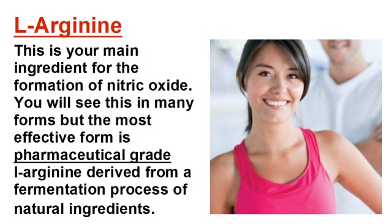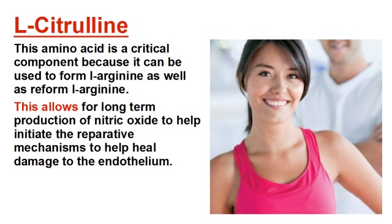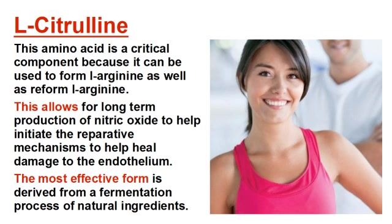The first ingredient is the amino acid L-arginine — your main ingredient for the formation of nitric oxide. The most effective form is pharmaceutical grade L-arginine derived from a fermentation process of natural ingredients. The second ingredient is the amino acid L-citrulline. This amino acid is a critical component because it can be used to form L-arginine as well as reform L-arginine for the enzymatic process of creating nitric oxide. This allows for long-term production of nitric oxide to help initiate reparative mechanisms to heal damage to the endothelium. The most effective form is L-citrulline derived from a fermentation process of natural ingredients.